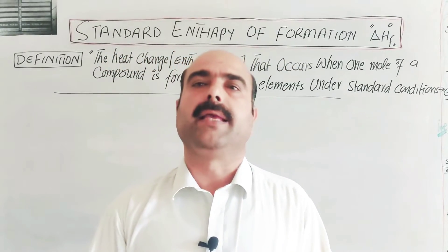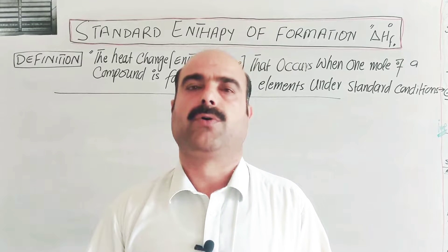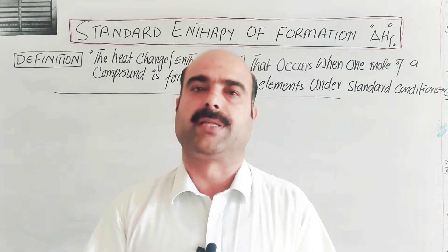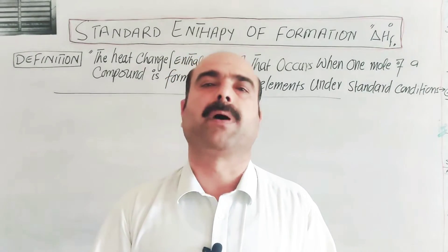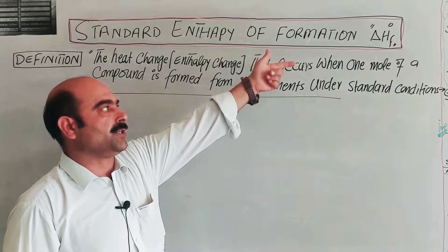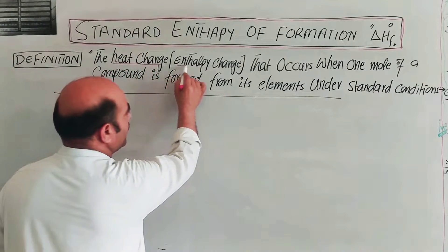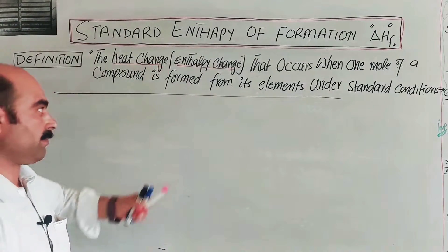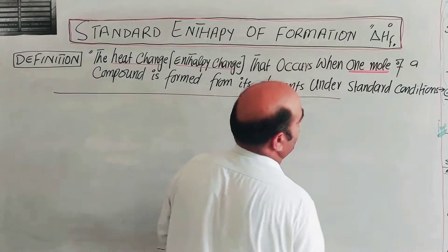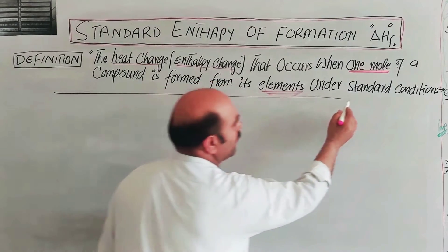The standard enthalpy of formation of elements in their natural state — such as copper, nickel, cobalt, silver, or oxygen in their elemental form, pre-state, or natural state — is zero. The definition: it is the heat change, the amount of heat evolved or absorbed, when 1 mole of a compound is formed from its elements under standard conditions.